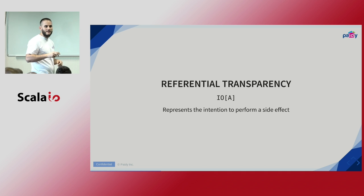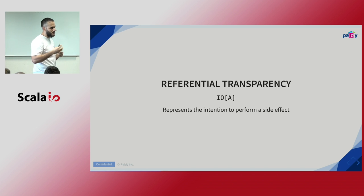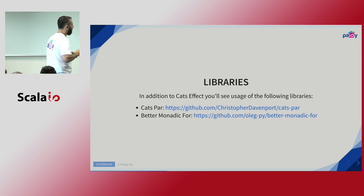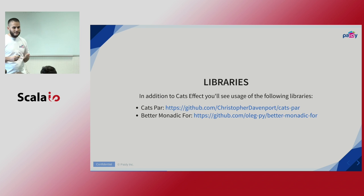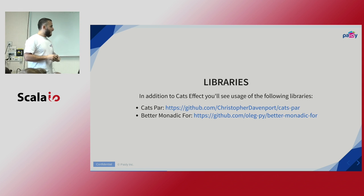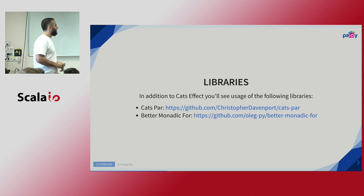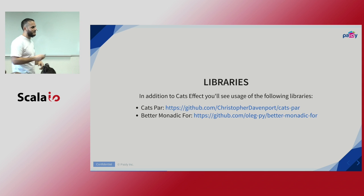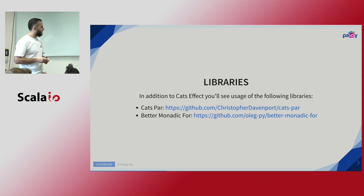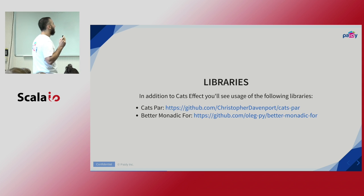I'm going to continue with some examples, showing how we can compose programs using IO and how we can refactor and test our programs. I'm using a few other libraries apart from Cats Effect: Cats-Par, which provides syntax for the Parallel type class, and Better Monadic For, which is a compiler plugin. You're going to see some code with slightly unusual syntax because of the plugin, but it's a great plugin — it's the default for me in any new project.